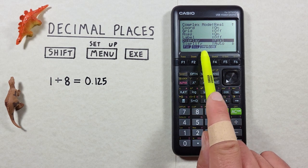If we're done with this and want to go back to normal mode again we just hit shift menu, scroll down to the display option and then we'll go back to norm mode here.